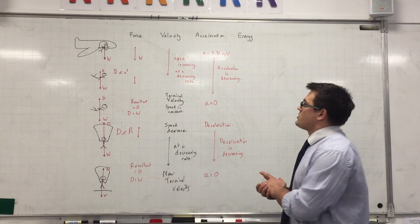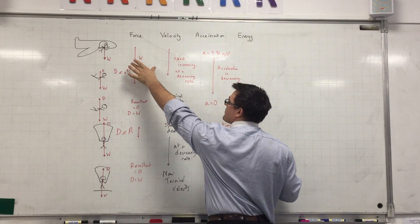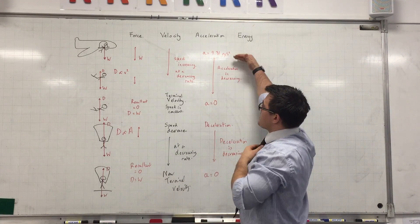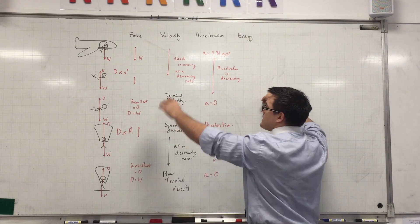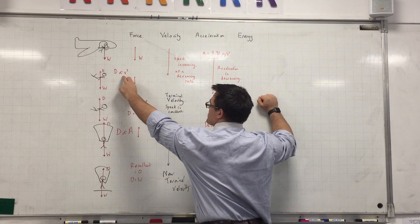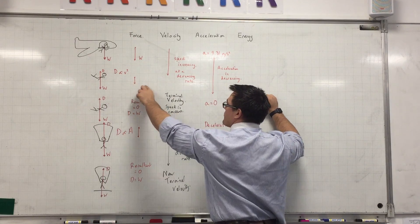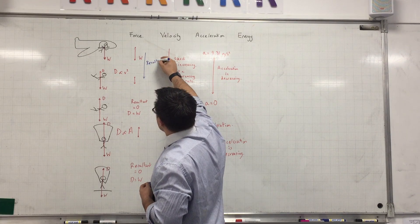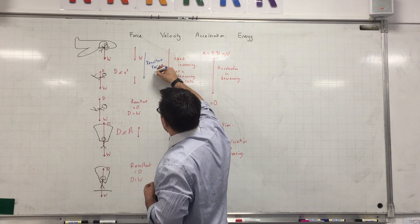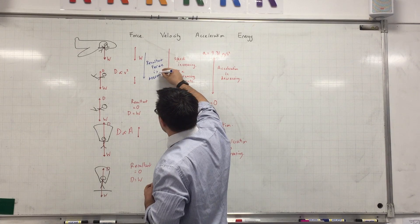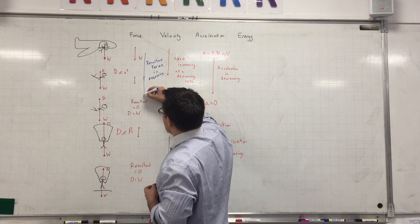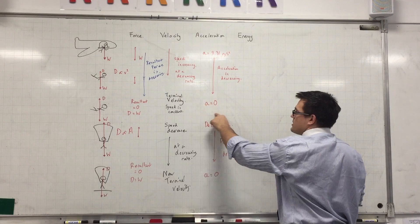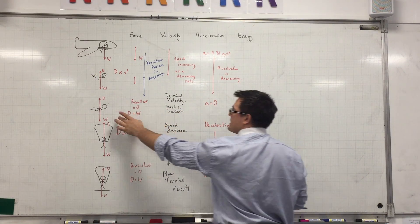In summary: as we jump out of the airplane, the only force acting on us is weight, causing us to accelerate downwards at 9.81 — the acceleration due to gravity. Because we are accelerating, our speed starts to increase. As speed increases, drag increases (since drag is directly proportional to speed squared), and as drag increases, the resultant force begins to decrease. From the jump to terminal velocity, the resultant force is decreasing — and because the resultant force is decreasing, the acceleration is decreasing — until acceleration reaches zero at the point we call terminal velocity, when weight equals drag.